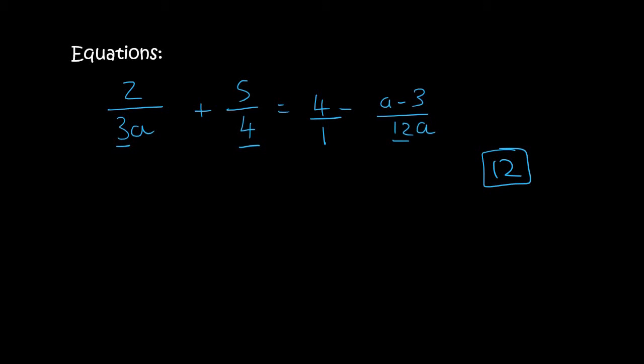Now that means that this one would need to be multiplied with 4. This one, the second one, would need to be multiplied by 3. This one would need to be multiplied by 12. And then this one is absolutely fine. But then we have to remember that there's an a in the denominator as well. So your common denominator should actually be 12a.